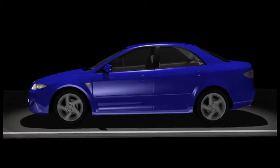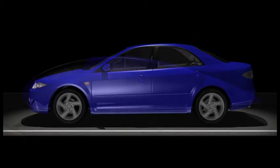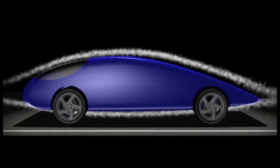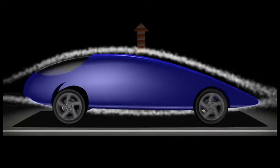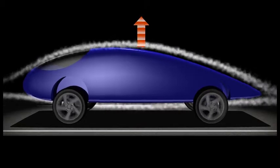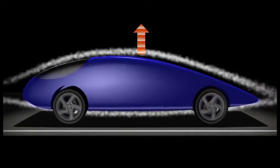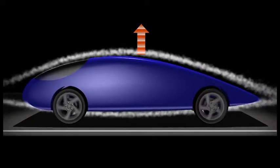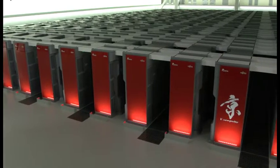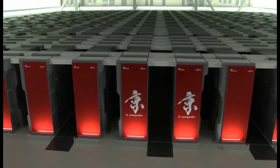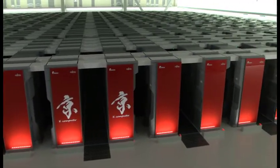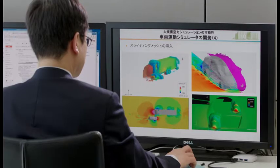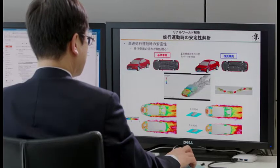The design with the lowest air resistance is an airfoil — the shape of an airplane wing. However, at high speeds, lift forces are produced and cars lose stability. We need cars with good fuel efficiency and improved stability. To keep these two contrary factors balanced, today's cars are designed using simulations with supercomputers.